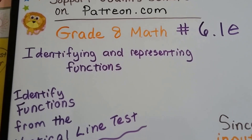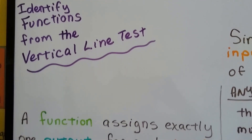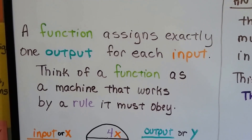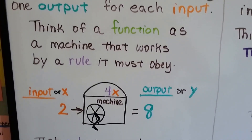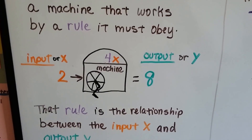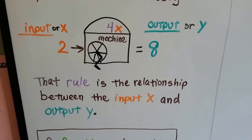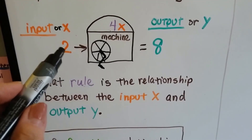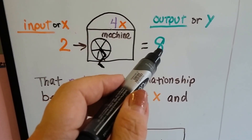Grade 8 math, number 6.1e: identify functions from the vertical line test. All through 6.1 we've talked about how a function assigns exactly one output for each input, and how we can think of a function as a machine that works by a rule it must obey. The rule is the relationship between the input x and the output y. So this 4x machine says that whatever x is will be multiplied by 4, and that's what the output will be.